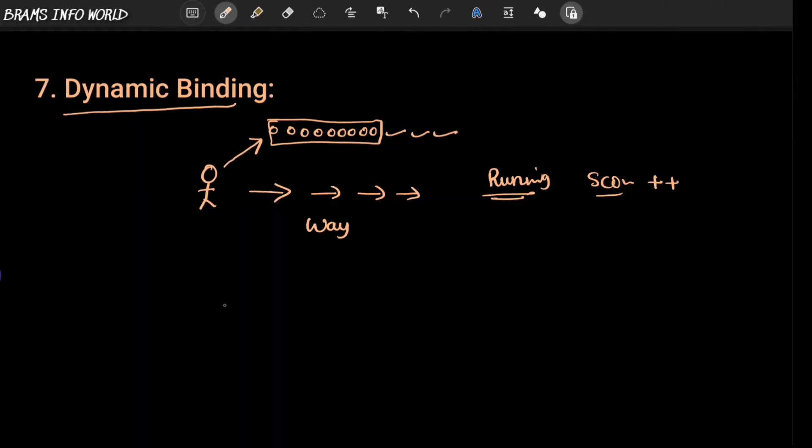That means there is some kind of process - this object we can call it as process. This process is linking with particular logic. That is nothing but in C++ we can call it as procedure, and in Java language we can call it as method. So this entire process is done during the runtime.